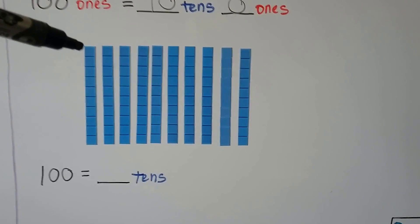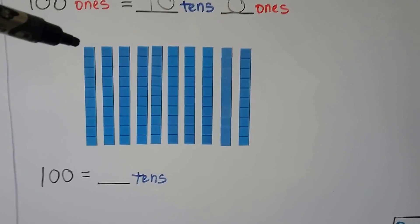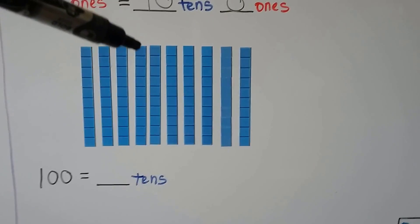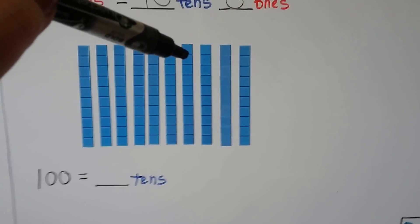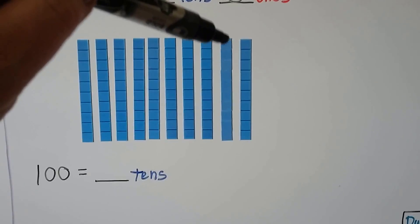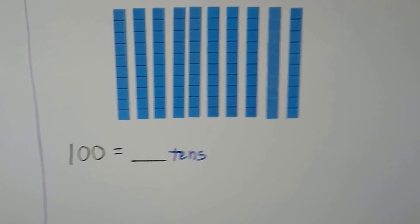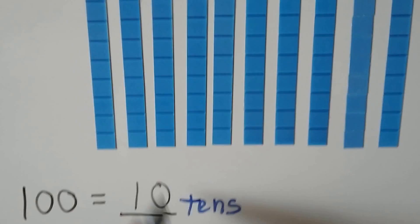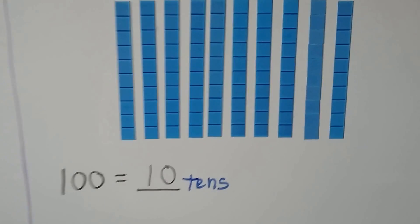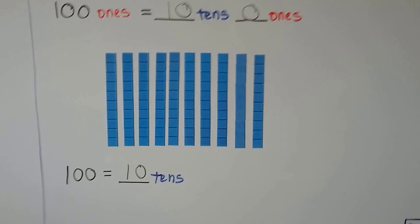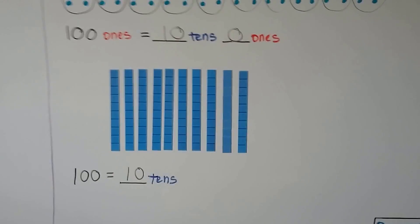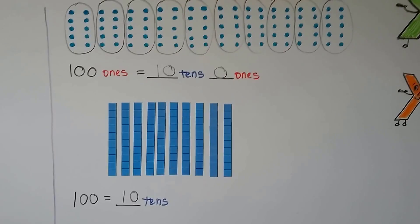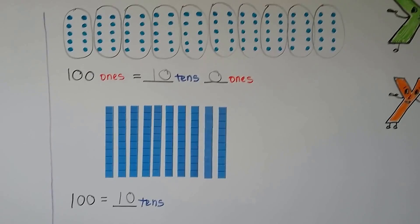We can also have ten bars of ten — one, two, three, four, five, six, seven, eight, nine, ten. One hundred is equal to ten tens. Ten groups of ten is equal to one hundred.